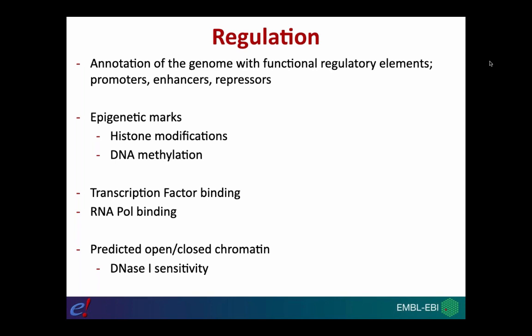To annotate these regulatory features for human and mouse, Ensembl incorporates data concerning a number of different types of genetic features. We look at epigenetic marks — data concerning histone modifications and DNA methylation across the genome. We also look at the pattern of transcription factor and RNA polymerase binding, and at the pattern of open and closed chromatin across the genome, using experimental evidence to annotate these regulatory features.